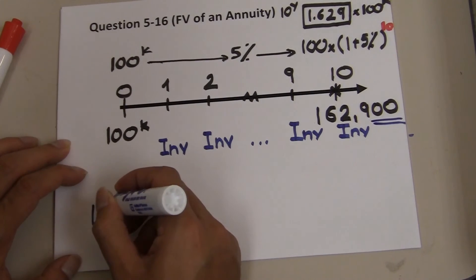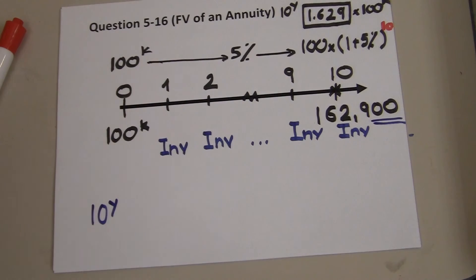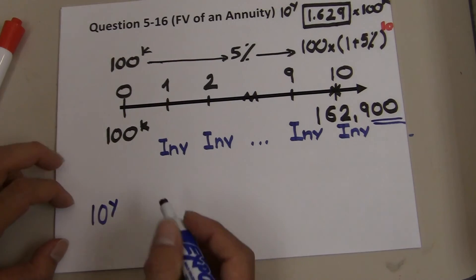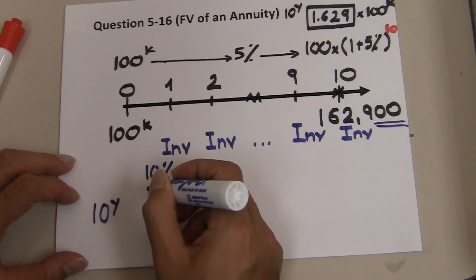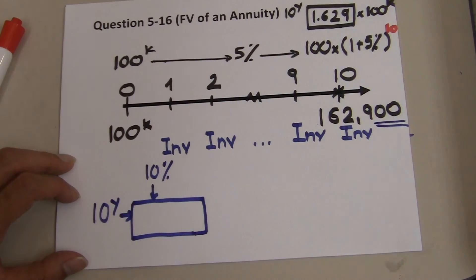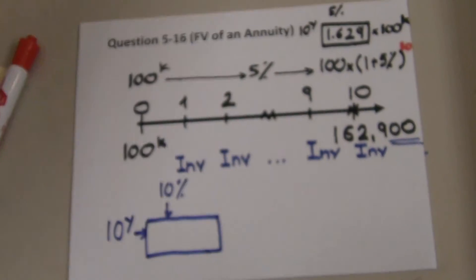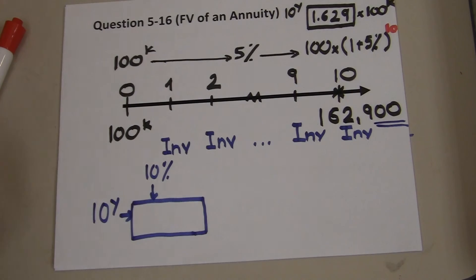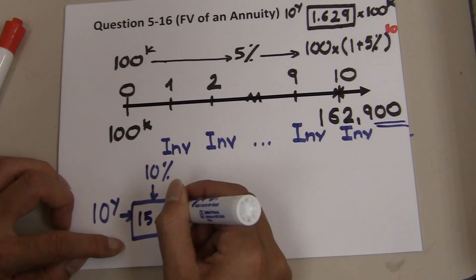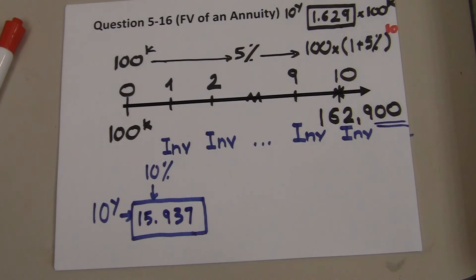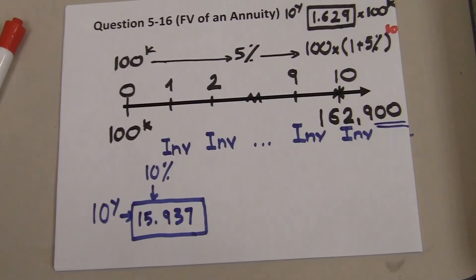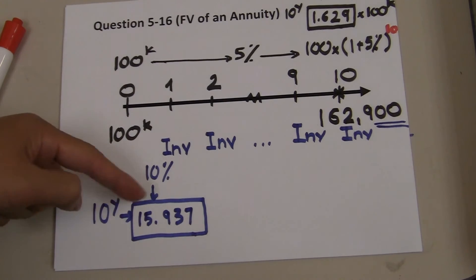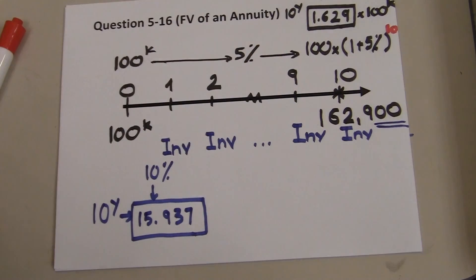To find it, you look at the sum-of-an-annuity table: 10 years and 10% — that is the rate of return on your investment. The number in that cell is 15.937. This means if you put in $1 at the end of each year for 10 years earning 10% interest, the future value of that annuity is $15.937.